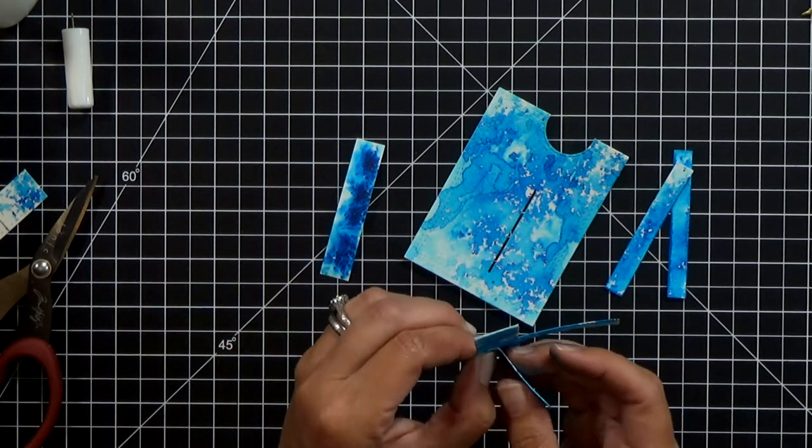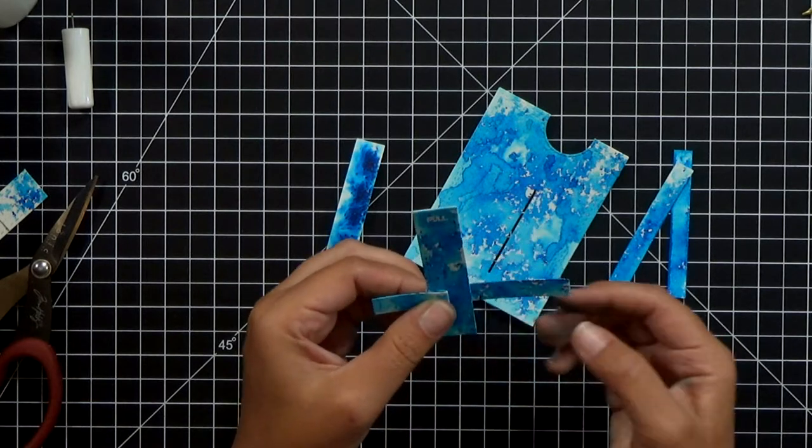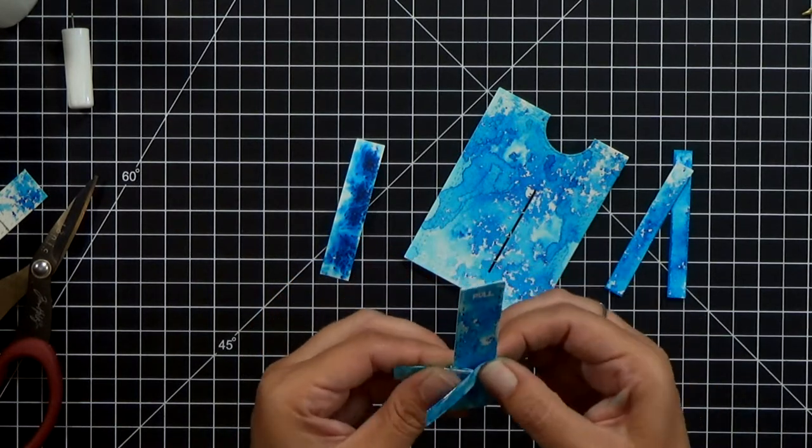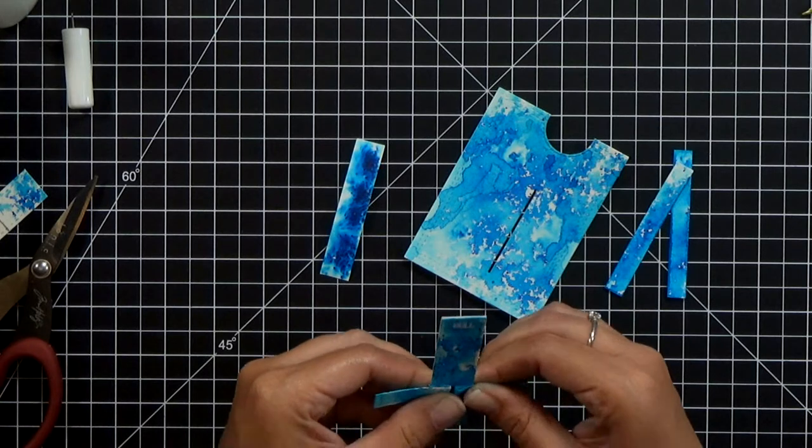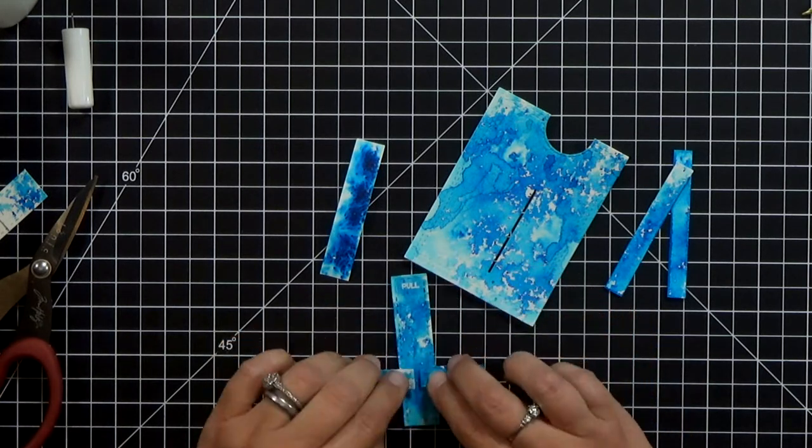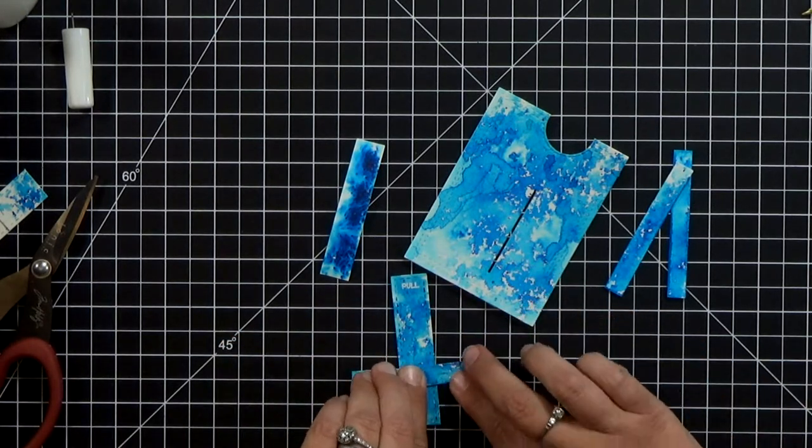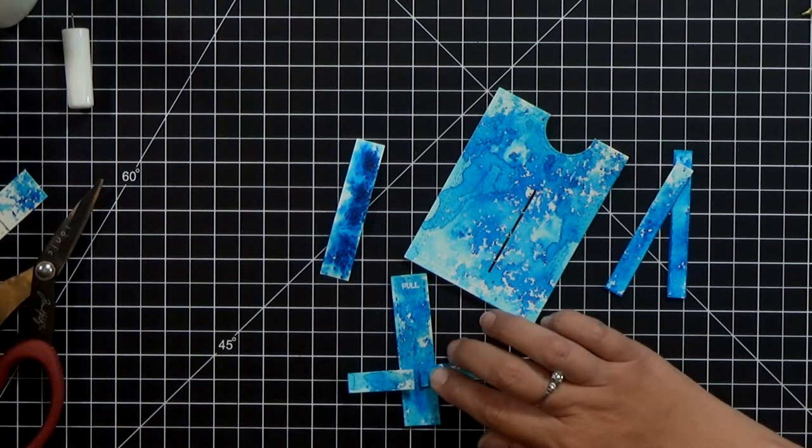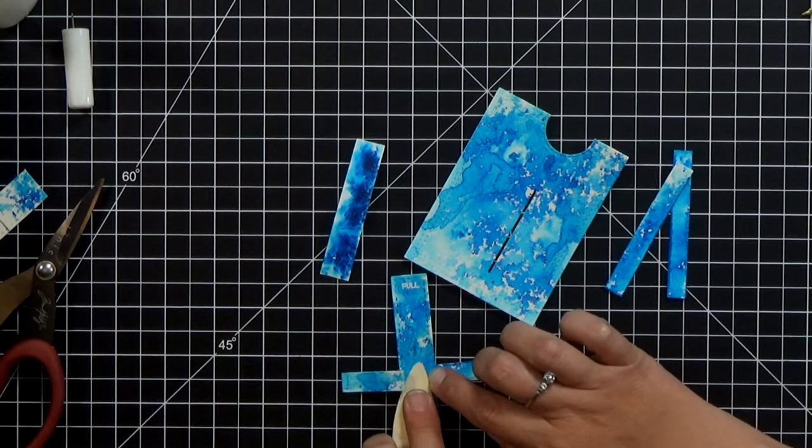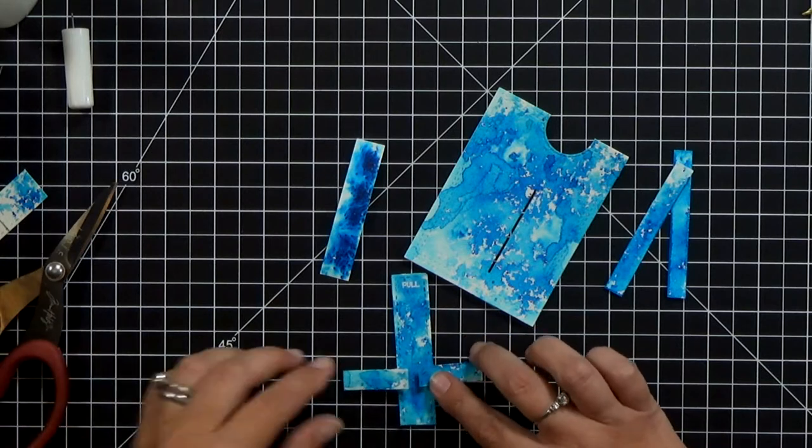I'm going to fold it from the back around the front and then back on itself roughly in the center. When I fold these two, those two pieces are not actually meeting in the center. There's a little bit of a gap and that gap is important.